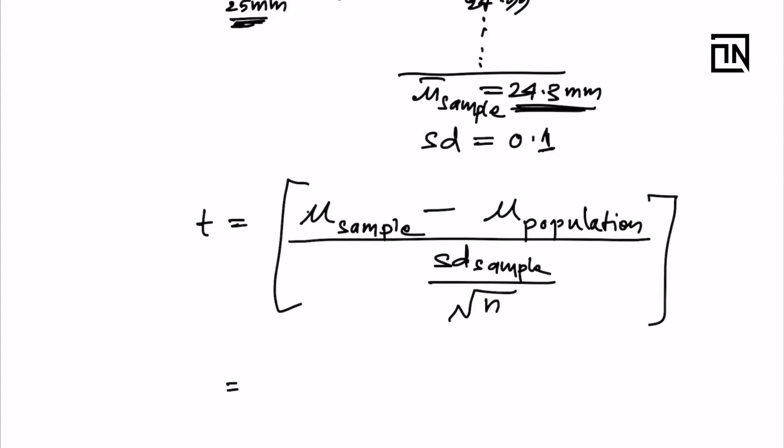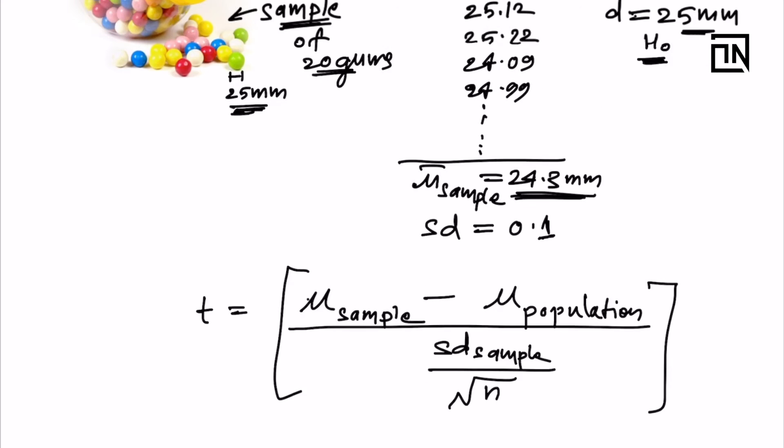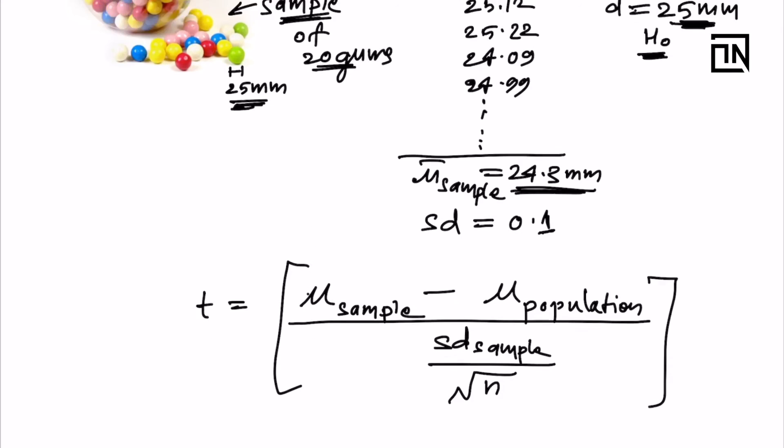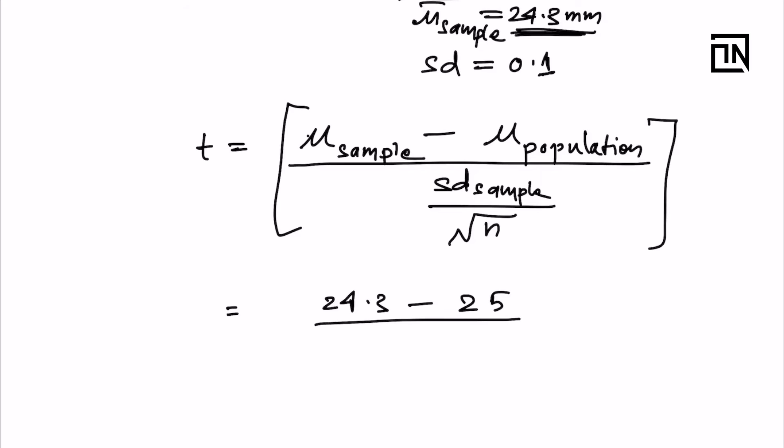Mean of sample came out to be 24.3 minus mean of population is 25. I'm assuming the mean of population should be 25 mm. The standard deviation came out to be 0.1, and I'm dividing it by the root of 20. This expression gives me a t-value. This t-value, if you evaluate, comes out to be minus 31.30.